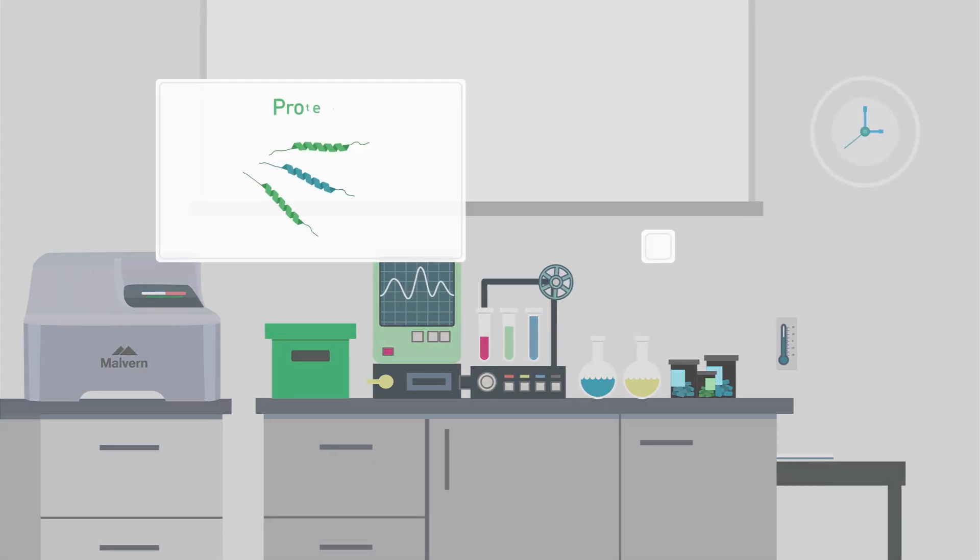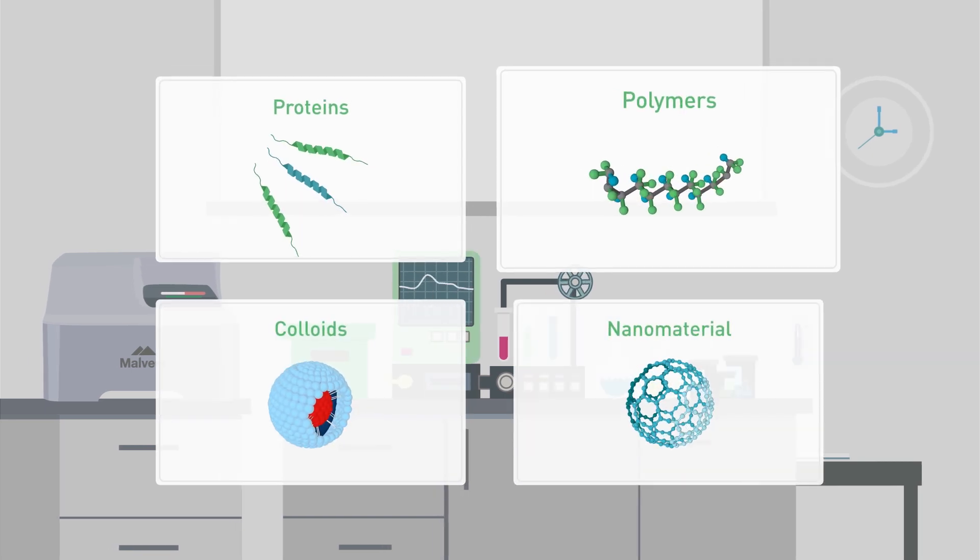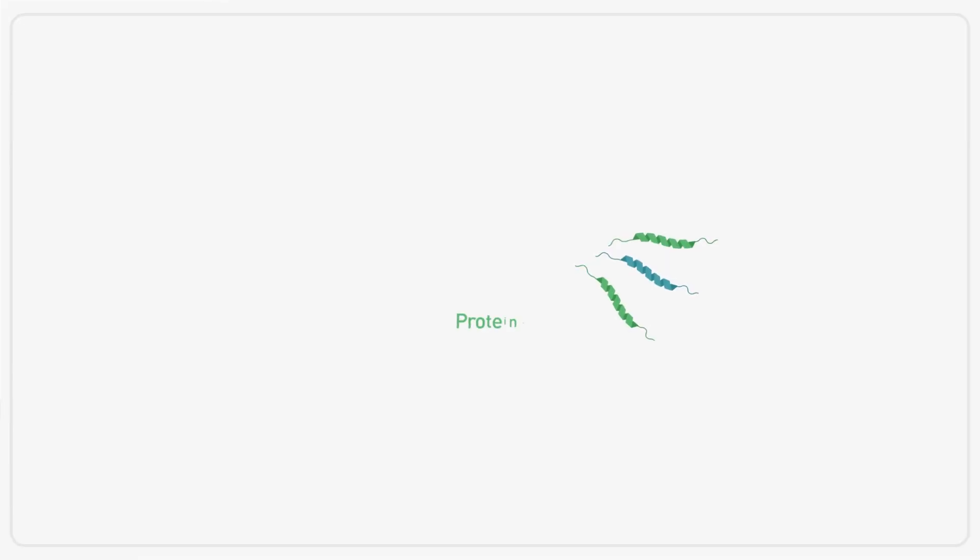Dynamic light scattering, DLS, is an excellent tool for characterizing the size of proteins, polymers, colloids or nanomaterials, from below a nanometer to several micrometers.